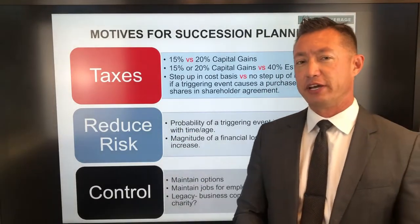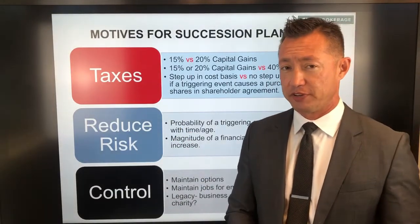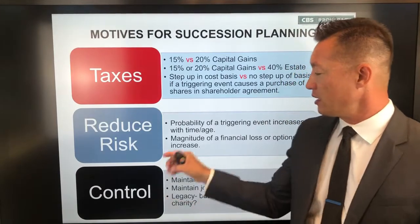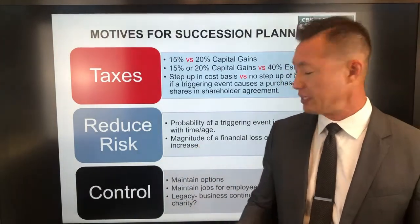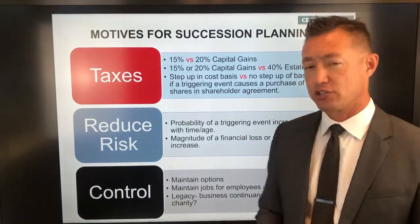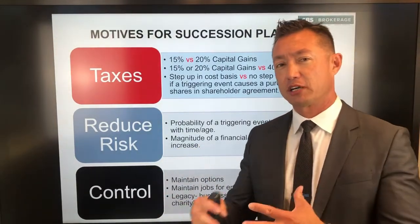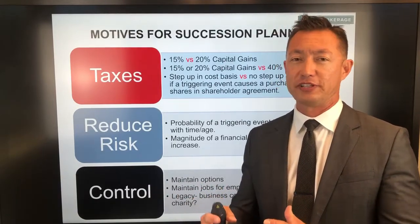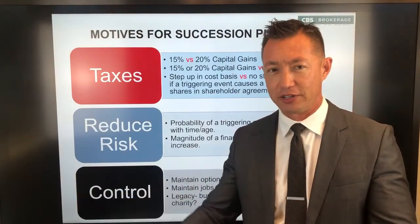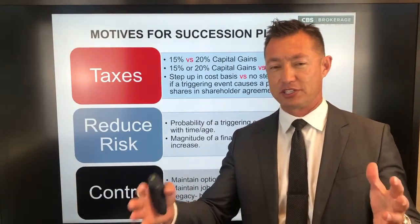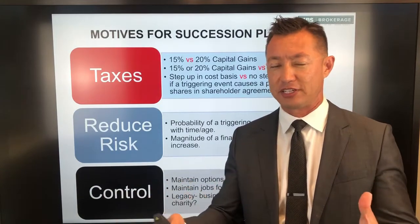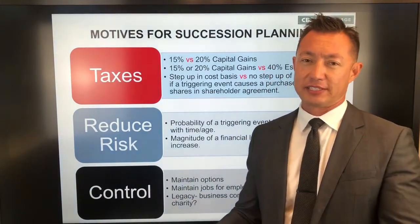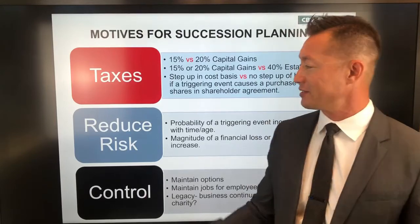We can reduce risk by insuring certain events that otherwise were not insured or underinsured, and reduce the magnitude of certain events. The time to talk about these things is not in the event of a triggering event — for example, if one of the partners wants to retire and the valuation methodology in the language isn't ideal. You want to talk about these things in advance, because that person would be over the barrel in that instance.